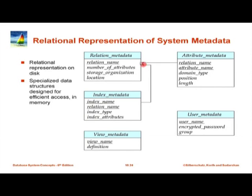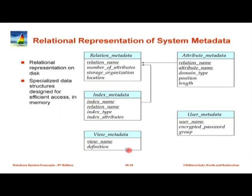All of this information can be stored as relations themselves. A schema diagram shows relation metadata with primary key being relation name, containing number of attributes, storage organization, and location. Attribute metadata has primary key of relation name and attribute name, with type, position within the record, and length. View metadata, index metadata, and user metadata are also included. Note that view metadata without a foreign key to relation means deletion of an underlying relation might not be detected.